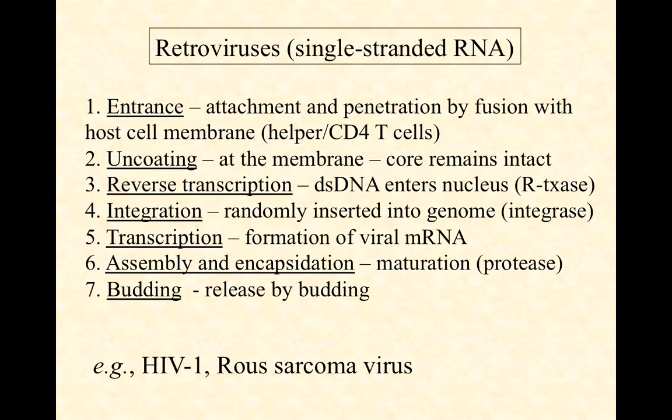Once inside, the capsid is uncoated at the membrane — proteases immediately degrade it. However, this is an unusual exception: rather than going directly from capsid to RNA, there is an intermediate structure called a core. The core is essentially a capsid inside the capsid — proteins that protect the RNA molecules themselves — and it remains intact throughout this process.